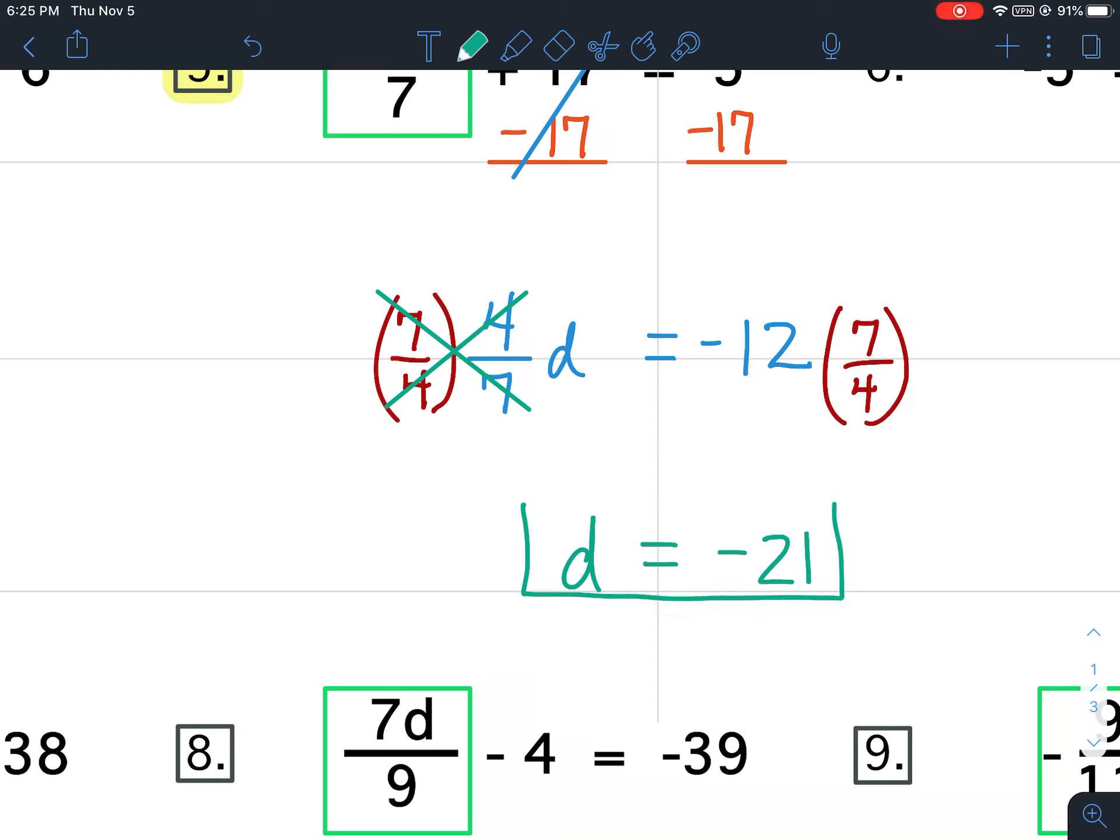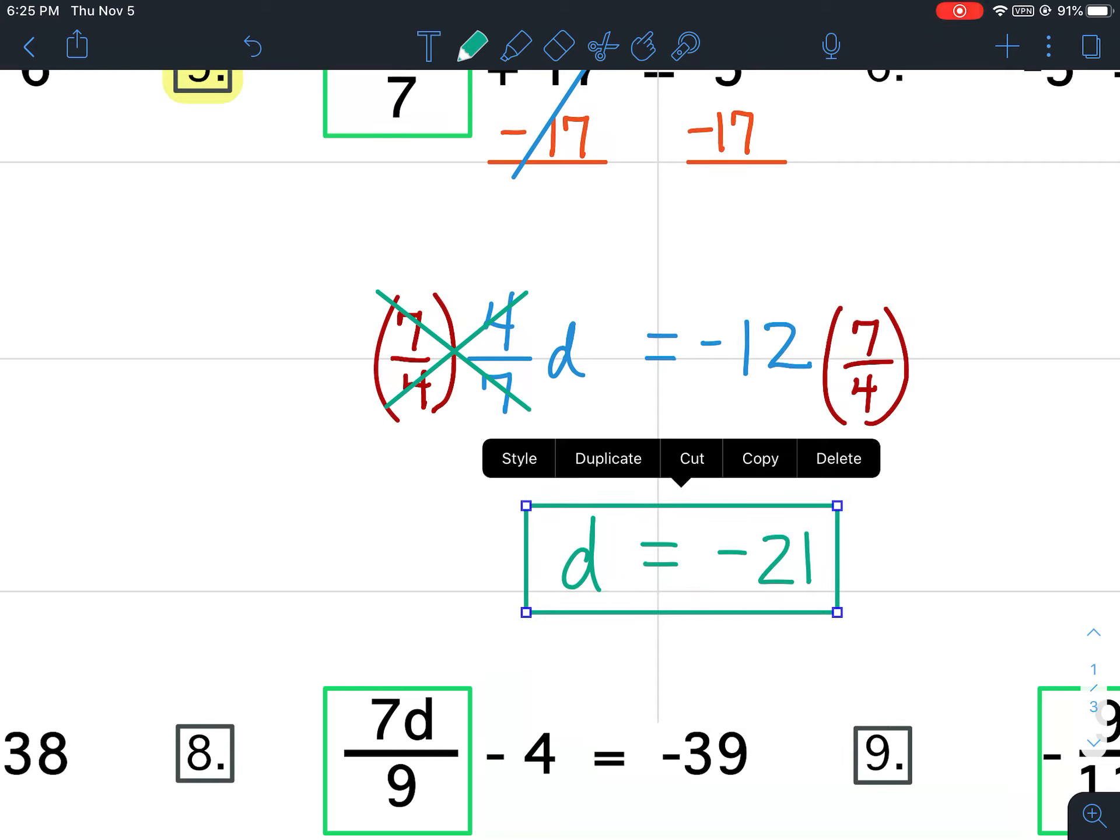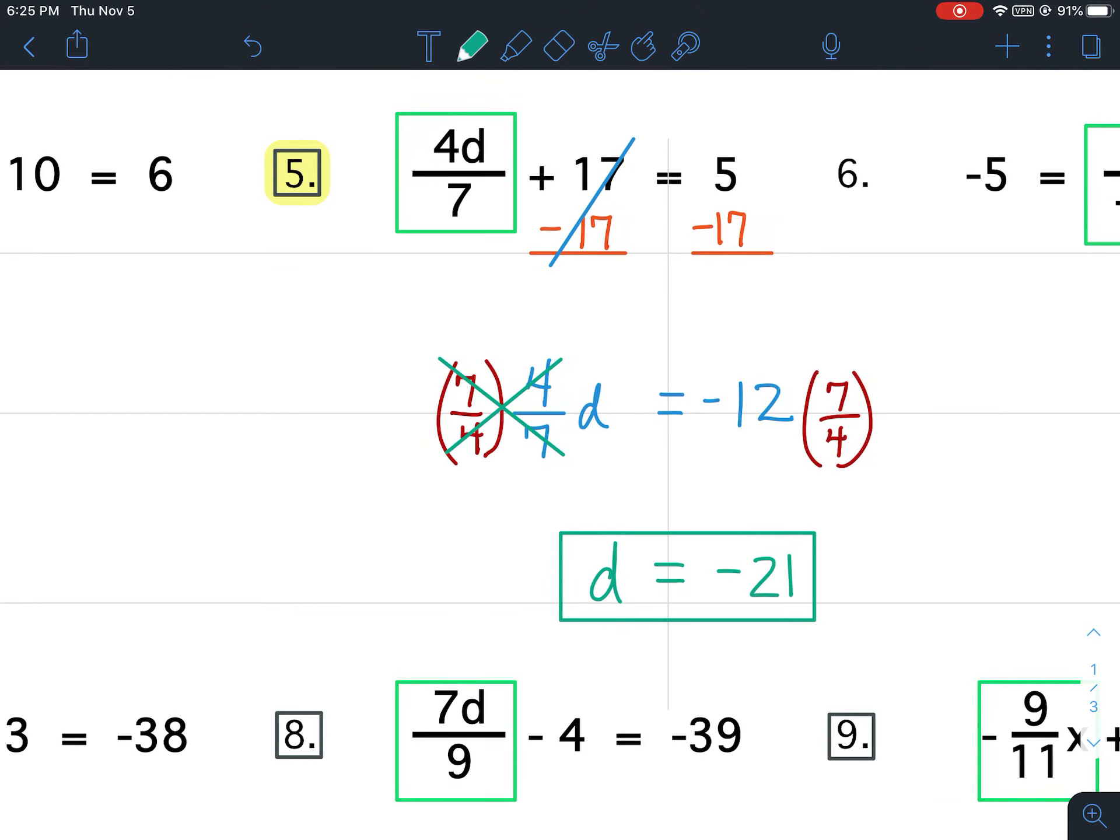You could put it in your calculator. I strongly suggest putting it in your calculator to make sure that you do the math correctly. And then when you're finished, remember, we're going to check it. So to check this, what I'm going to do is I'm going to take 4 7ths. I'm going to multiply it by our answer of negative 21. And then I'm going to add 17. So this is what I'm going to use to check my answer.